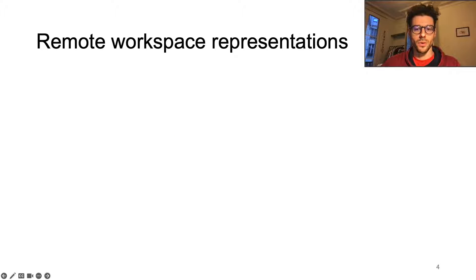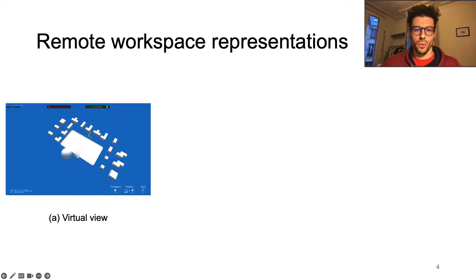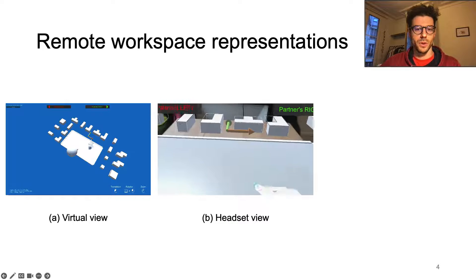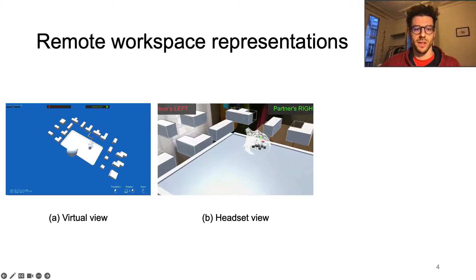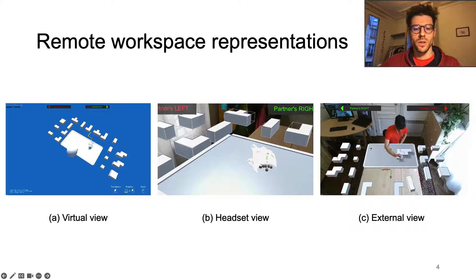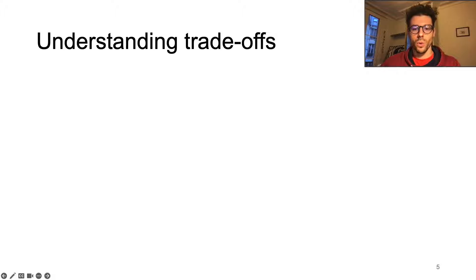Considering the impact of viewpoint, workspace representations and navigation control, we investigated three remote workspace representations: a fully virtual representation, a first-person view as provided by an augmented reality headset, and an augmented third-person view as captured by an external fixed camera with a depth sensor. Our goal was to understand how do remote users perceive the trade-offs of these three representations when providing instructions to an augmented reality worker.